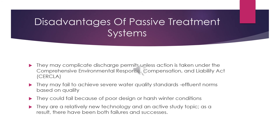The disadvantages of passive treatment systems include: they may complicate discharge permits unless action is taken under the Comprehensive Environmental Response Compensation and Liability Act. They may also fail to achieve severe water quality standards based on effluent norms. They could fail because of poor design or harsh winter conditions. They are a relatively low-technology and active study topic — as a result, there have been both failures and successes.